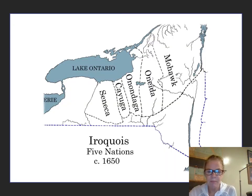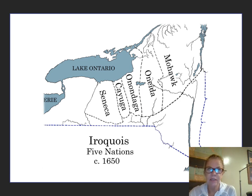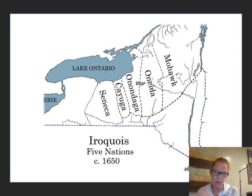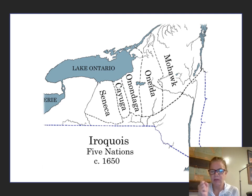Here is a map from about 1650 — keep in mind that the British established themselves at Jamestown, Virginia, in 1607, and in what is today Boston in 1620, with droves of people coming in 1630. So the Native Americans were feeling the pressure. You have the Mohawk, the Onondaga, the Cayuga, the Seneca — these different groups coming together to form the confederation known as the Iroquois.